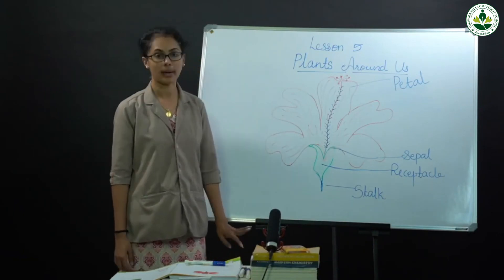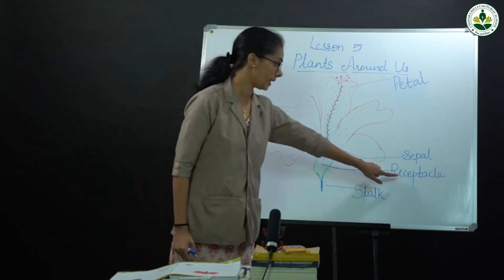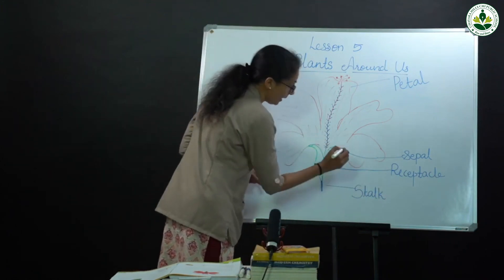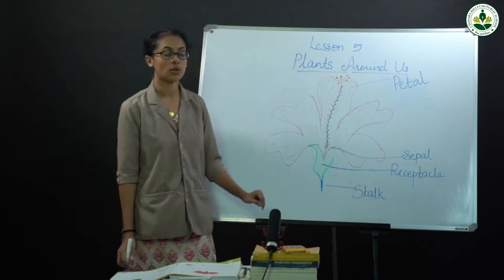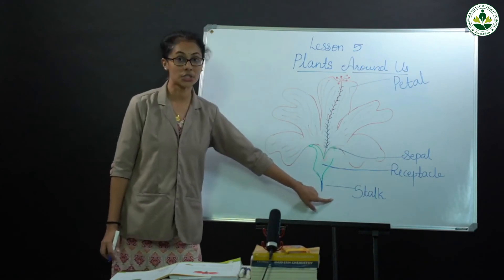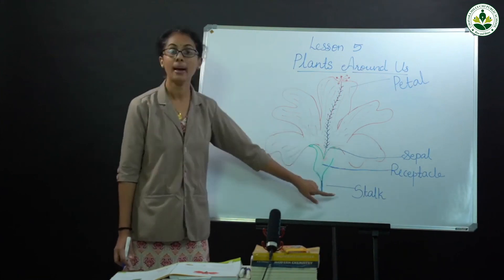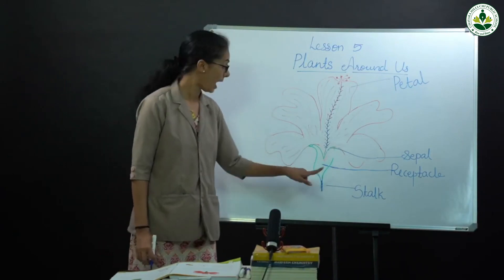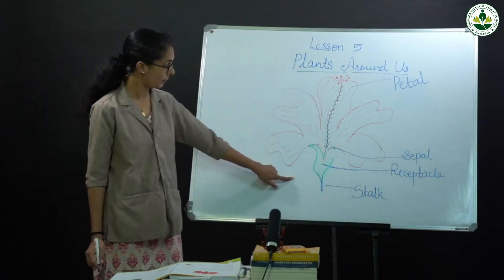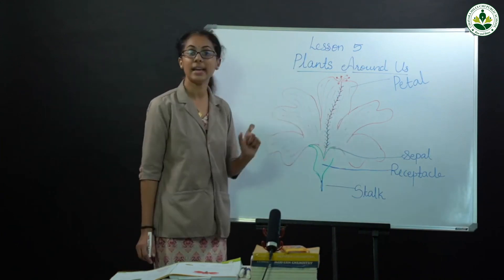Now let's look at the different parts of a flower. The first part is the receptacle, which is the base of a flower. The second part is the stalk — the stalk is the part of a flower to which the other parts are attached.